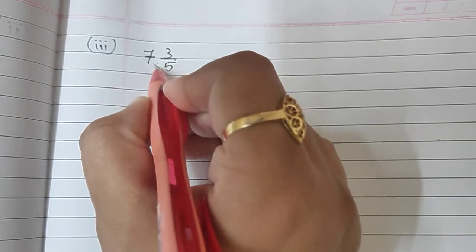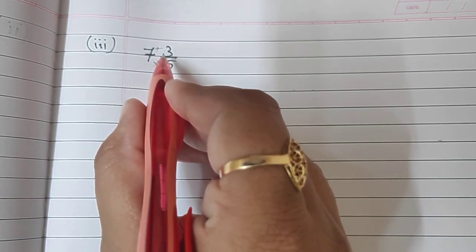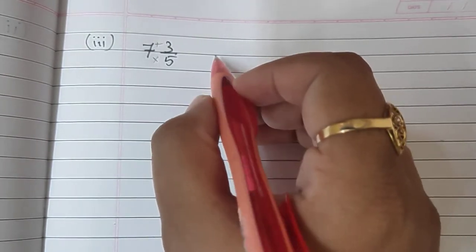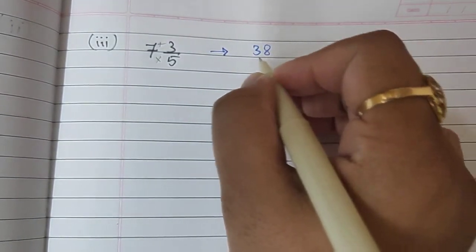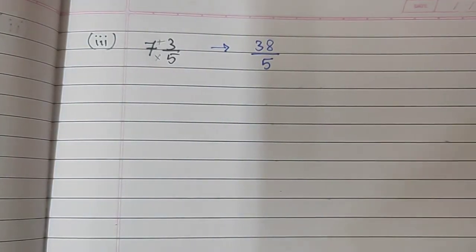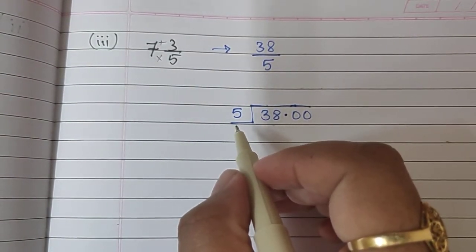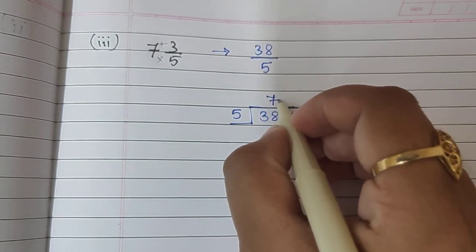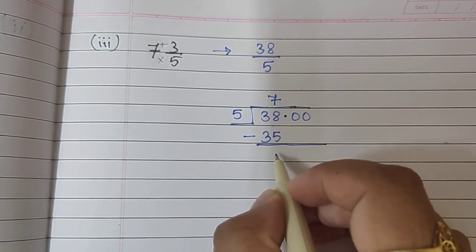So, what we are going to do is multiply and plus 5, 7's are 35 plus 3, 38. So, my answer will be 38 upon 5. Now, we will do the division. 5, 7's are 35. So, I will write here 7. 7's are 35. Subtract. What will remain? 3.